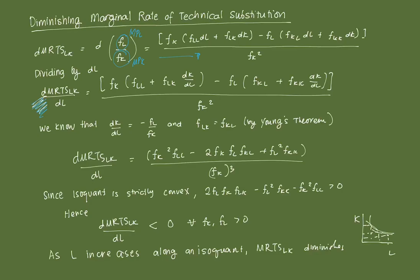Then we divide both sides by dL. So we get d(MRTS_LK) divided by dL. We can see that dL over dL cancels to 1, and we are left with dK over dL terms. Now, dK over dL along the isoquant is the slope of the isoquant, which equals negative FL over FK. We also know that FLK equals FKL — those are second-order cross-partial derivatives equal by Young's theorem. Substituting these in, we can solve for the final form.